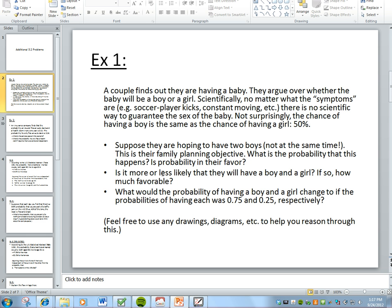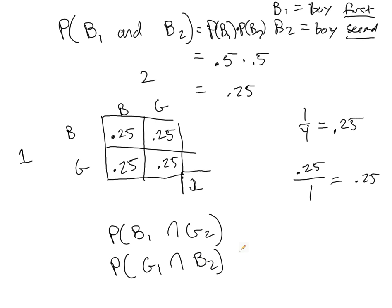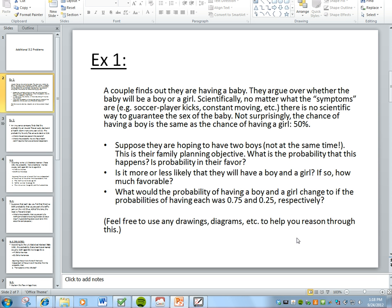Now suppose we want to know: is it more or less likely that they will have a boy and a girl, and if so, how much more favorable? Well, since we have two possibilities for this — the probability of having a boy first and then a girl second, or the probability of having a girl first and then a boy second — that's actually two cases: 25% and an additional 25%. So jointly they represent 50% of the total possibilities, and that's our probability.